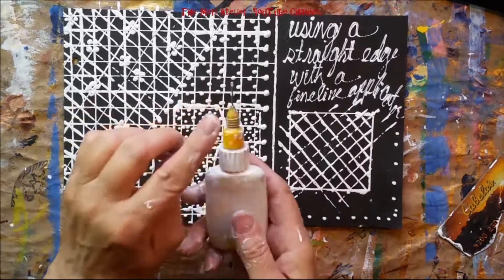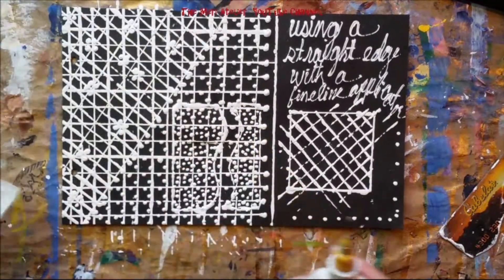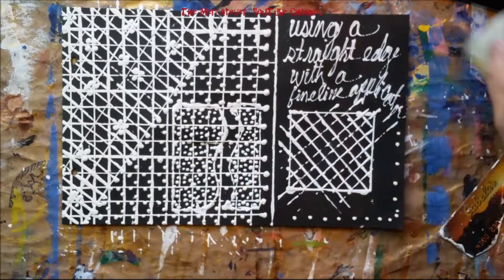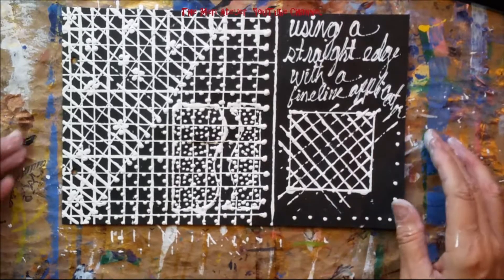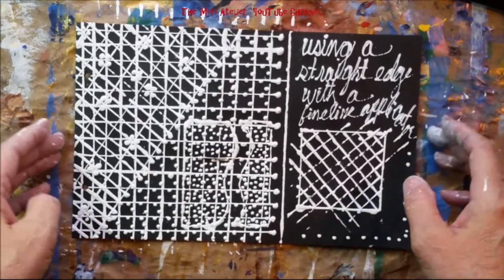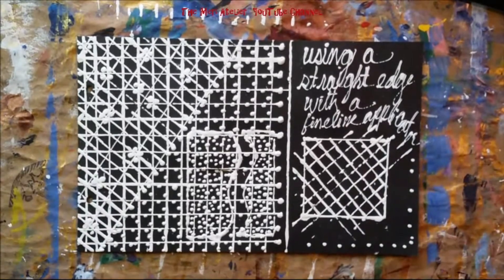So I'm going to go clean the nozzle of my applicator and clean off my ruler and call this finished. I'm really happy with this. I have another page in my little technique book. Thank you for watching and I will see you on the next page.